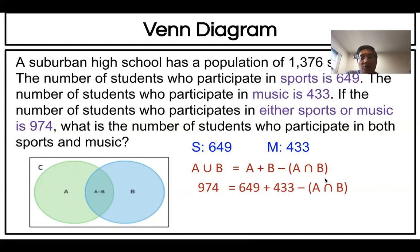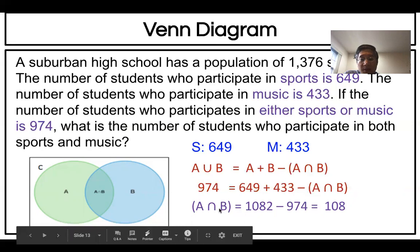Now to solve this one, what should we do? You move intersection to this side and 974 to the other side. Intersection moved here to the left side, minus becomes plus. 974 becomes minus. If you add 649 plus 433, that's 1,082. You subtract 974, and the intersection is 108.